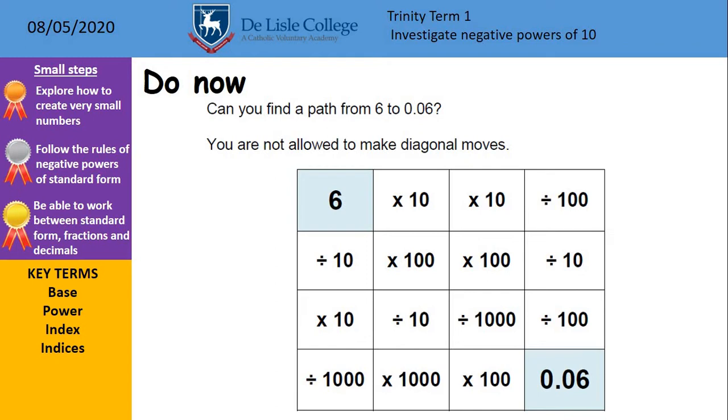So your do now task is to see, can you find a path from the top left 6 to the bottom right 0.06, and you're not allowed to make diagonal moves, so you're going to go horizontally or vertically to see if you can get all the way from 6 to 0.06. Pause the video, have a go, and I'll show you a route that I found earlier.